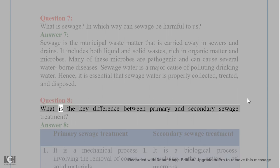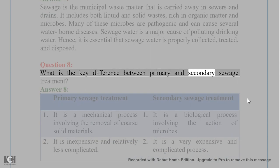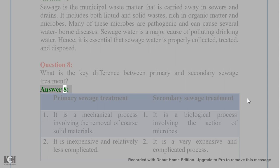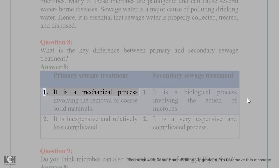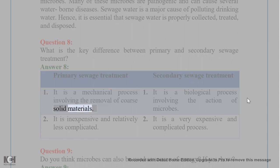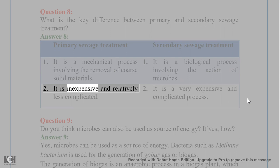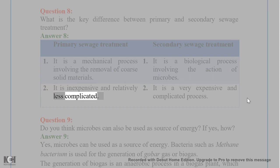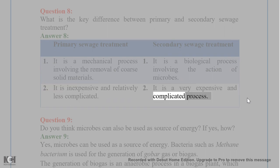Question 8. What is the key difference between primary and secondary sewage treatment? Answer 8. Primary sewage treatment is a mechanical process involving the removal of coarse solid materials; it is inexpensive and relatively less complicated. Secondary sewage treatment is a biological process involving the action of microbes; it is a very expensive and complicated process.